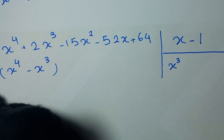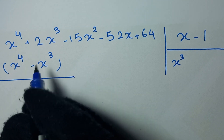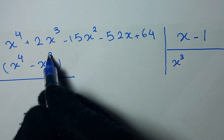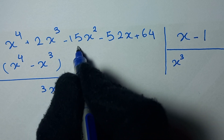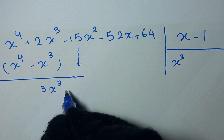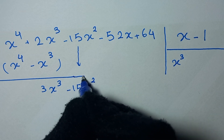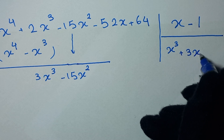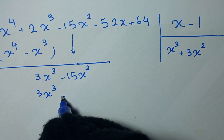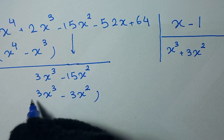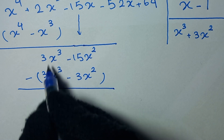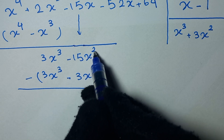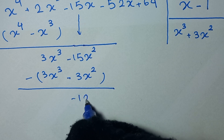We bring down negative 15x squared. We have 3x cubed divided by x, so we multiply by 3x squared giving 3x cubed minus 3x squared. Subtracting gives 0, and negative 15x squared minus negative 3x squared gives negative 12x squared.